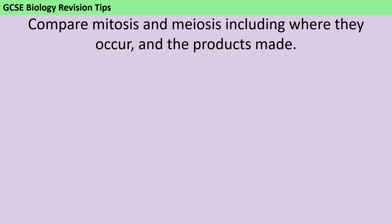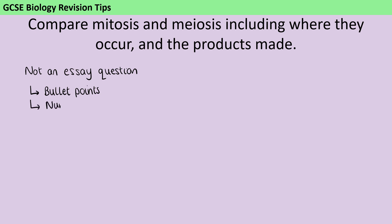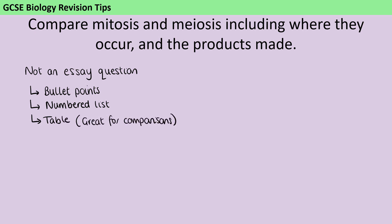The point still stands that this is not an essay question and you aren't going to get marks for writing in full sentences. I would strongly encourage you to give your answer in the form of bullet points or numbered lists, or better yet, a table — because this is a comparison question and tables are perfect for comparing two aspects. You need to make sure that you are answering the full question, so here we've specified that you must include where mitosis and meiosis occur and also what the products being made are.